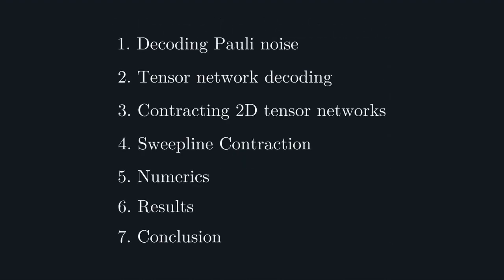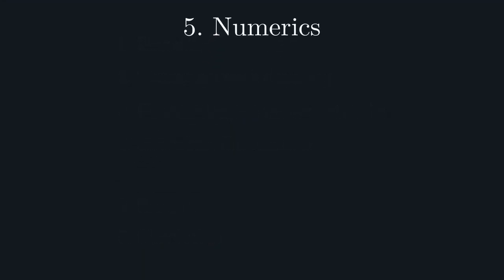So, now that I've introduced the sweep-line-contraction algorithm, how well does it work? To demonstrate the flexibility and efficacy of this tensor network approach, I tested it against 13 exemplary 2D quantum codes, each subject to three different noise models, giving a total of 21 independent thresholds. Before we come to the codes, let's consider the three error models we're going to test them against.